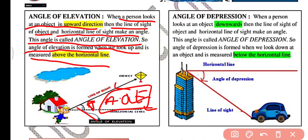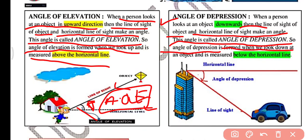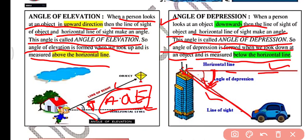The angle of depression is formed when a person looks at an object downward. The line of sight to the object and the horizontal line make an angle, and this angle is called the angle of depression. It is measured below the horizontal line. As you can see, your eyes are parallel to the horizontal line, and the line of sight going down forms the angle of depression, abbreviated as AOD.